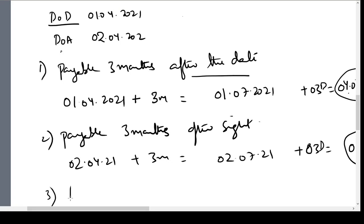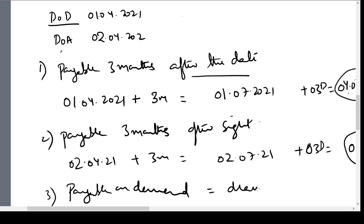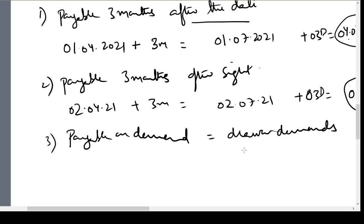If the bill is payable on demand, then whenever the drawer demands, the bill has to be honored by the drawee.